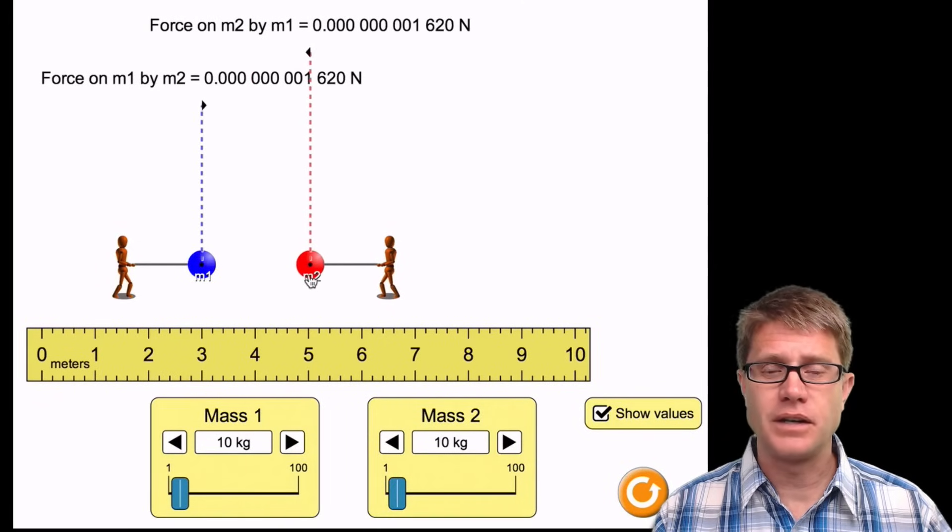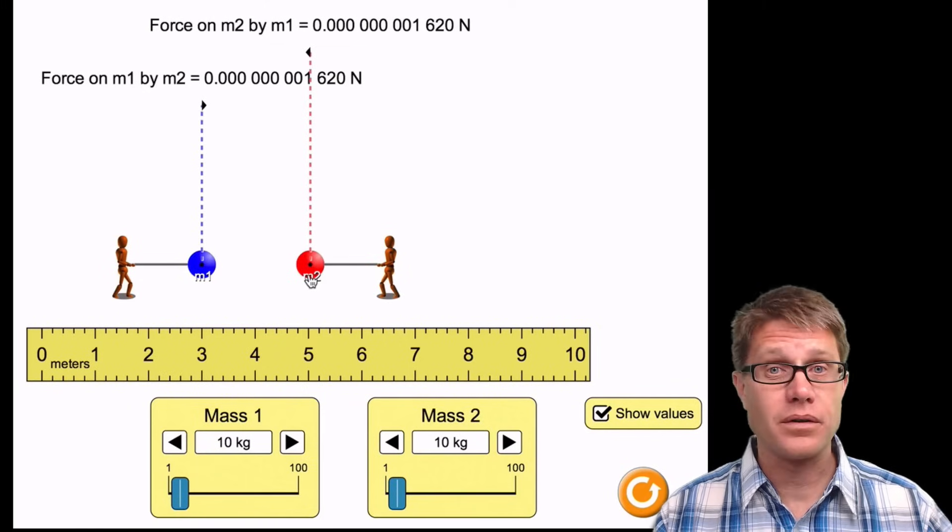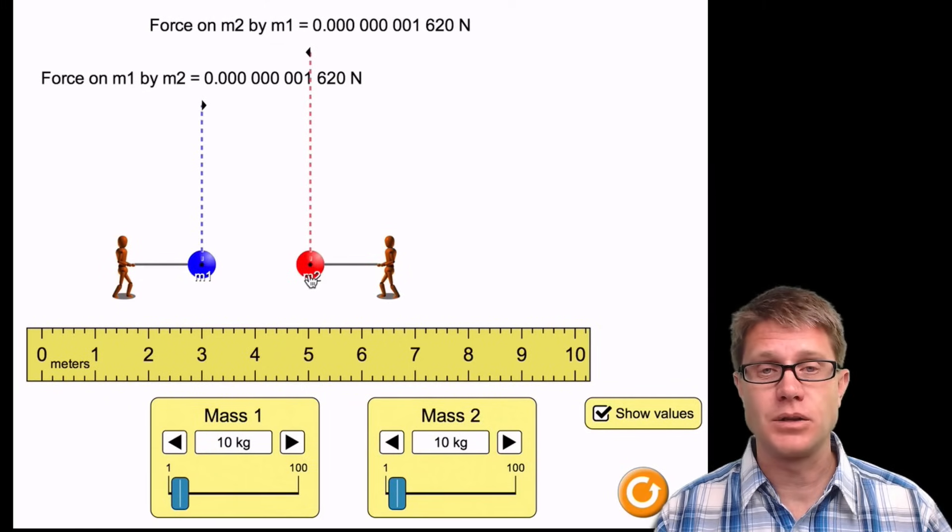But it is not the same if we are looking at the distance. If I double that we are not just cutting it in half, we are taking it by a fourth. And that is because we are squaring that distance between the two.